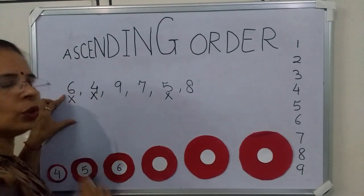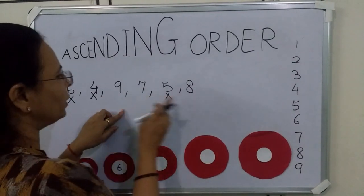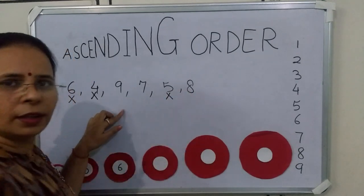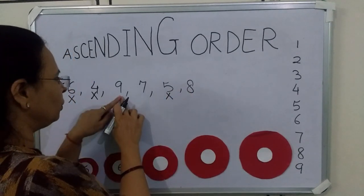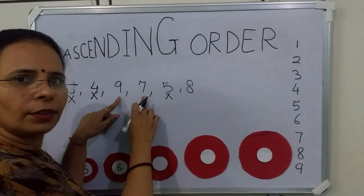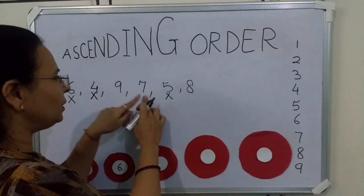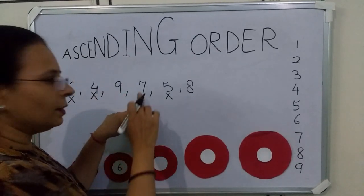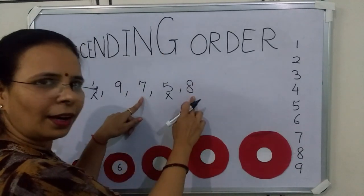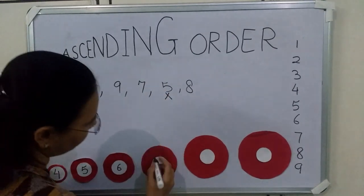We have written 6, so we will cut it. Now we have to find the smallest number from these 3 numbers. We see 9 first. Is 9 smaller than 7? No, so we will skip 9. Now we will see 7. Is 7 smaller than 9? Yes. Is 7 smaller than 8? Yes. So we will write 7.